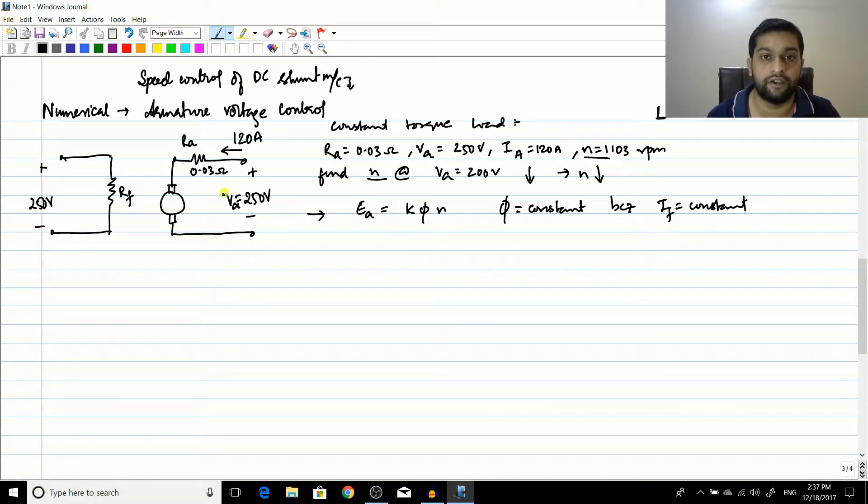I can put the equations: EA1 would be proportional to N1 and EA2 will be proportional to N2. So let us find what is the value of EA1. EA1 would be equal to...